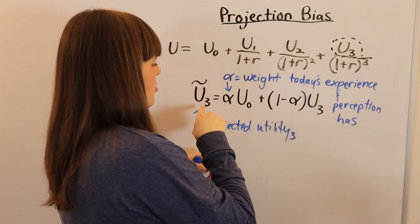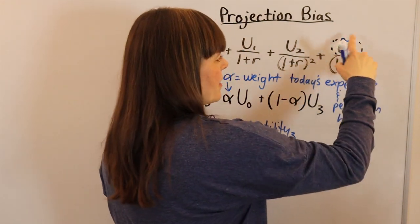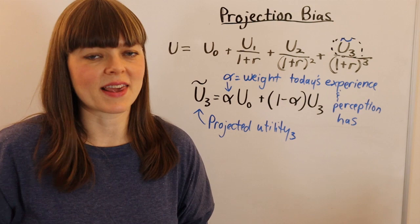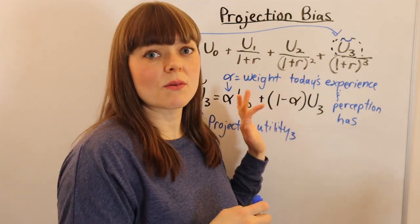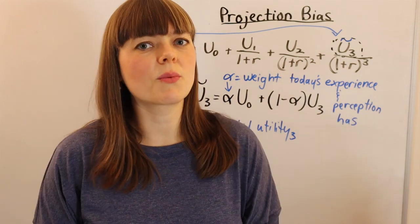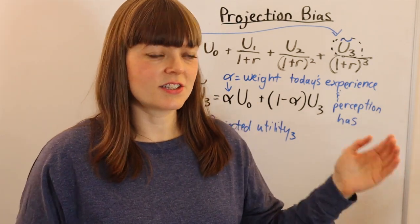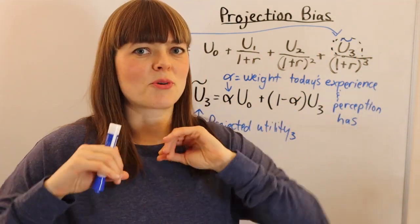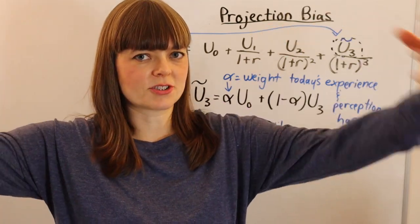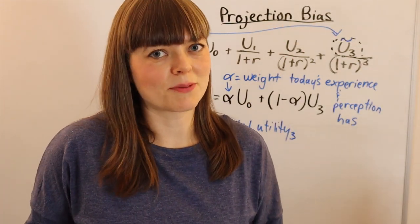This is a bias we'll use in our utility function for today when making decisions. That's how projection bias works. This is one way of modeling it, not the only way, but you get the sense. Projection bias has to do with how we think about something in the future and how we project today's experiences, perceptions, and preferences into the future more than we should.